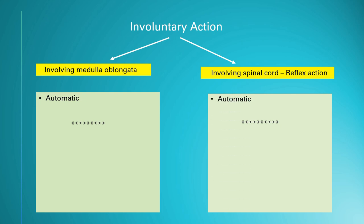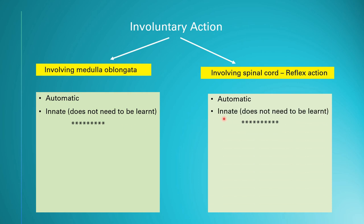Both types are automatic, meaning they happen by themselves without thinking. Both are also innate — you do not need to learn them because you are born with them. Even babies are born with these actions. Now let's look at the differences between involuntary actions involving the medulla oblongata and those involving the spinal cord, known as reflex action.